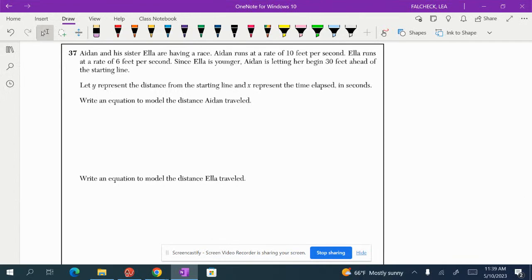Hey guys, this is number 37. Aiden and his sister Ella are having a race. Aiden runs at a rate of 10 feet per second and Ella runs at a rate of 6 feet per second. Since Ella is younger, Aiden is letting her begin 30 feet ahead of the starting line. Let y represent the distance from the starting line and x represent the time elapsed in seconds. Write an equation to model the distance Aiden traveled.